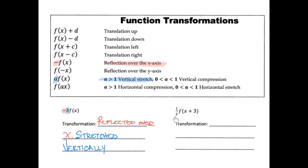Now for the second one, I again have a number multiplying my whole function. That number is one half. Since one half is between zero and one, this is no longer a vertical stretch — this will be a vertical compression. Then I also have a plus three, which is adding only to the x value, adding inside of the parentheses. Adding inside of the parentheses means a translation to the left — translated three to the left.